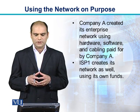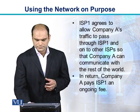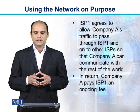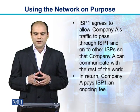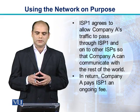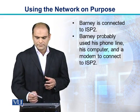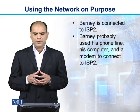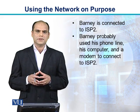Company A has created its enterprise network using hardware, software, and cabling paid for by Company A. ISP-1 has created its own network as well using its own funds. ISP-1 agrees to allow Company A's traffic to pass through ISP-1 and to other ISPs so that Company A can communicate with the rest of the world. In return, Company A pays an ongoing fee to ISP-1. Barney is connected to ISP-2, probably using his phone line, his computer, and a modem.